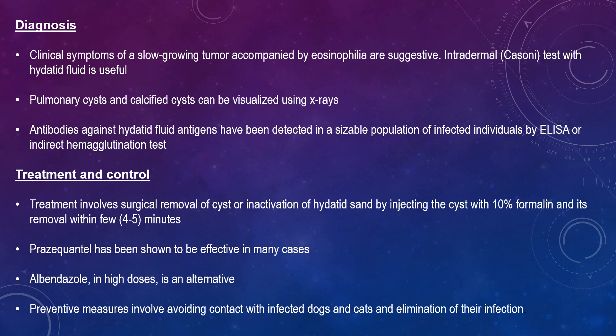For diagnosis, clinical symptoms of a slow-growing tumour accompanied by eosinophilia are suggestive. The intradermal Casoni test with hydatid fluid is useful. Pulmonary cysts and calcified cysts can be visualised using X-rays. Antibodies against hydatid fluid antigens have been detected in a sizeable population of infected individuals by ELISA or direct haemagglutination test. Treatment involves surgical removal of cysts or inactivation of hydatid sand by injecting 10% formalin into the cyst and its removal after 4 to 5 minutes. Praziquantel has been shown to be effective in many cases, and another alternative is albendazole in high doses. Preventive measures involve avoiding contact with infected dogs and cats and elimination of the infection.